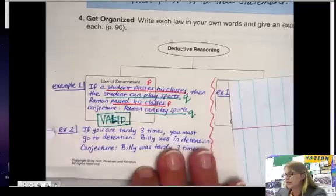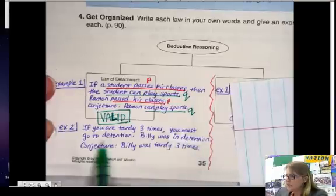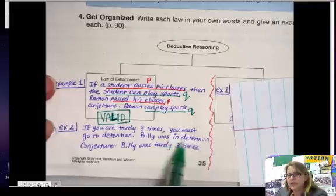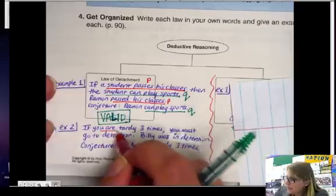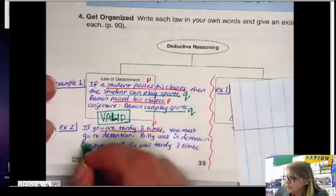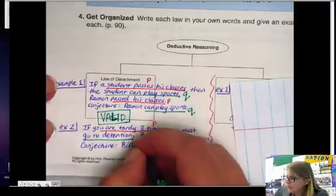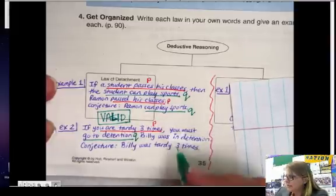So let's take a look at example two. If you are tardy three times, you must go to detention. Billy was in detention. Conjecture: Billy was tardy three times. So in this case, we have you are tardy three times is our P statement. You must go to detention is our Q statement.